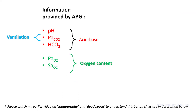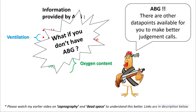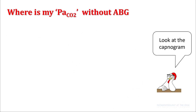ABG provides quite a lot of information like ventilation, oxygen content, and acid-base disturbance. However, if you don't have an ABG, there are a lot of other data points available to make better judgment calls. The best way to figure out PaCO2 without a blood gas is to look at your capnogram. Most ventilators have volumetric capnography built in, so make sure you turn it on.